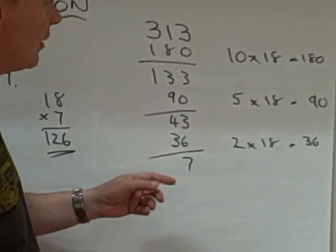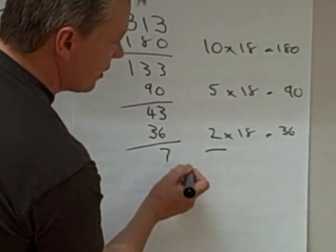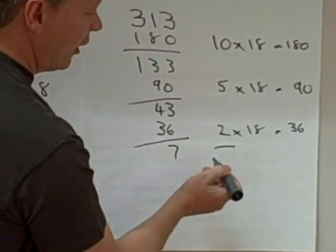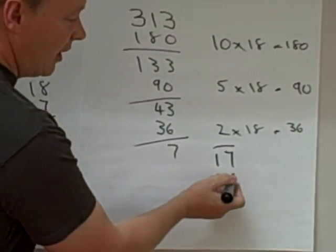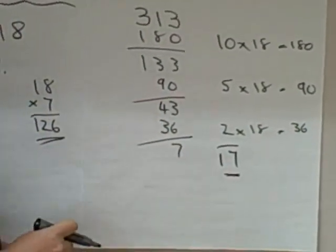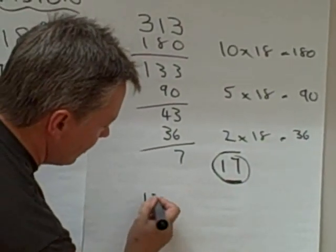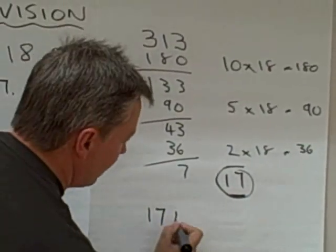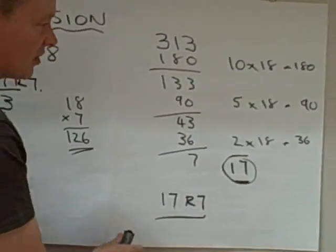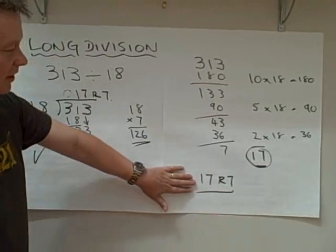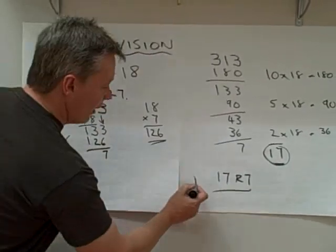So what I've done is I've taken chunks of 18s off. Now if I add those chunks up, I've got 10 plus 5 plus 2 is 17. So the answer to how many times will 18 go into 313 is 17 chunks of 18 and 7 bits left over. So I can still get exactly the same answer using a chunking method as opposed to a formal method.